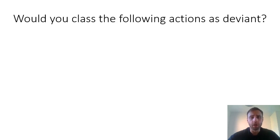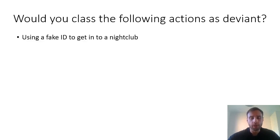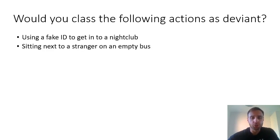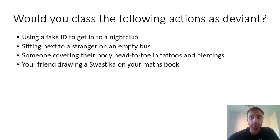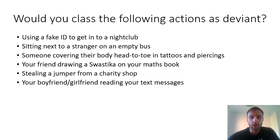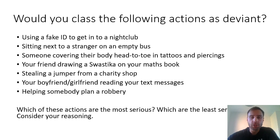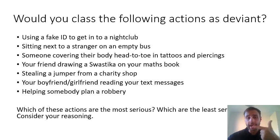Once you've done that, I'd like you to think about the following actions — you don't really need to write anything, but I want you to think. Would you class the following as deviant: using a fake ID to get into a nightclub; sitting next to a stranger on an empty bus during normal times; someone covering their body head to toe in tattoos and piercings; your friend drawing a swastika on your maths book; stealing a jumper from a charity shop; your boyfriend or girlfriend reading your text messages; helping someone plan a robbery. Which are the most serious, which are the least, and are any of them not only deviant but also illegal?